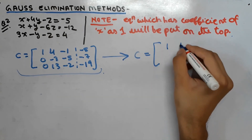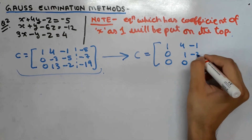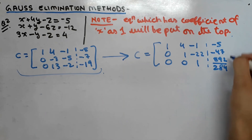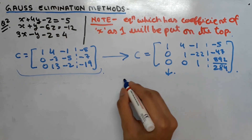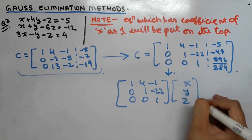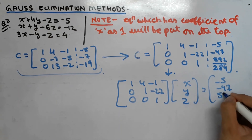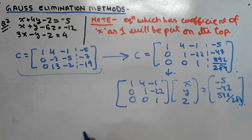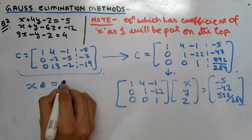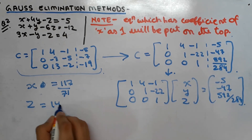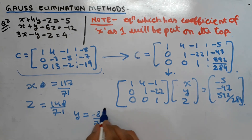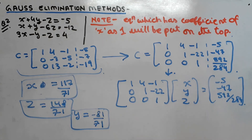The final echelon form of C comes out to be: row 1: 1, 4, -1; row 2: 0, 1, -22; row 3: 0, 0, 1, with B column: -5, -47, 592/284. From this we form linear equations and find: x = 117/71, z = 148/71, and y = -81/71. This is the final answer. Please check once you have converted the C matrix into echelon form.